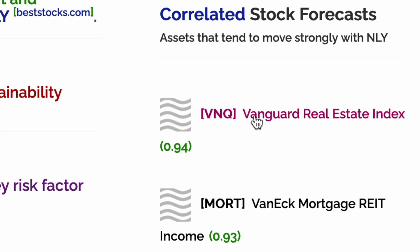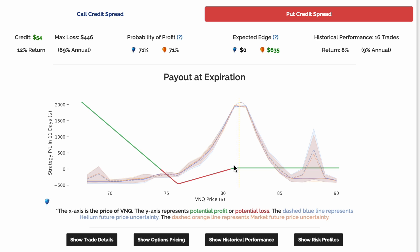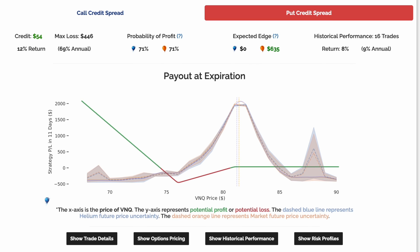To balance the risks of this trade, we can open a new position on a highly correlated underlying. A strong underlying correlation of 0.94 means that NLY and FNQ tend to move in tandem. This trade benefits from an increase in the price of the underlying. For our initial trade, our downside risk was to the upside. If the prices of the two underlyings are highly correlated, our first trade losing money implies a high likelihood of our second trade winning money, and vice versa.